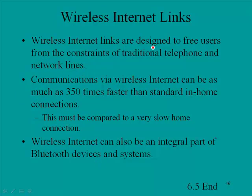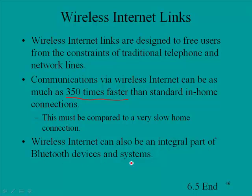Wireless internet links are designed to free users from the constraints of traditional telephone and network lines. Communications via wireless network can be as much as 350 times faster than standard in-home connections — though this comparison must be against a very slow home connection, as wired connections via cable, T1, T3, or fiber are vastly faster than wireless internet. Wireless internet connections are usually faster than a dial-up modem, and wireless internet can also be an integral part of Bluetooth devices and systems.